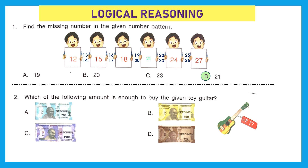Question 2: which of the following amount is enough to buy the given toy guitar? The price of the toy guitar is Rs. 77, so we need Rs. 77 or more. Option A is 50 — less than 77, we cannot buy it. Option B is 20 — again cannot buy it. Option C is Rs. 100, which is greater than 77, so yes we can buy the toy guitar. Option D is Rs. 10 — cannot buy it. The right answer is option C, Rs. 100.